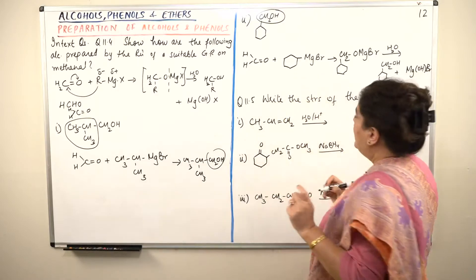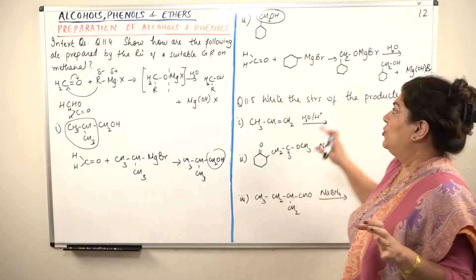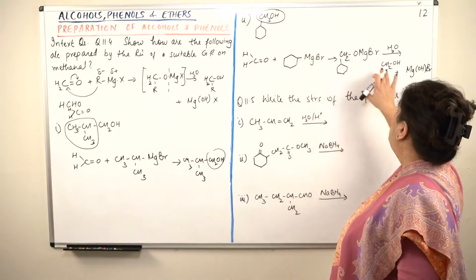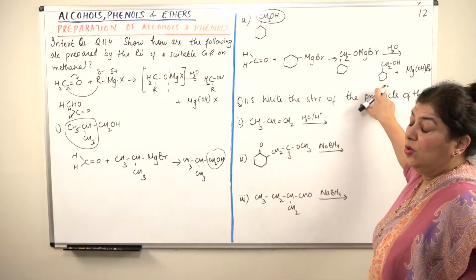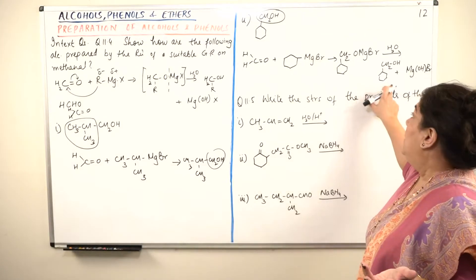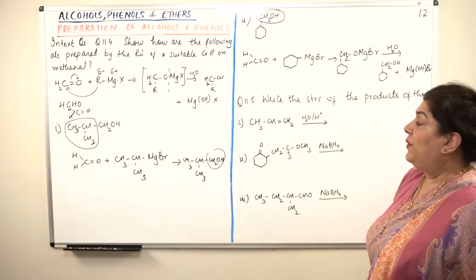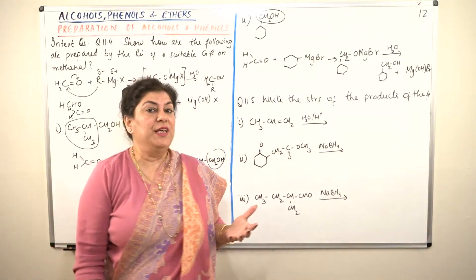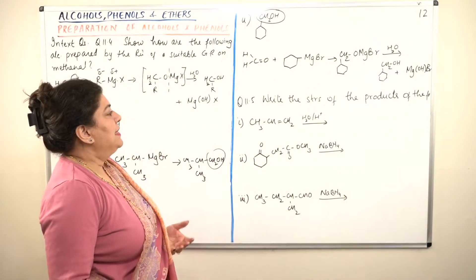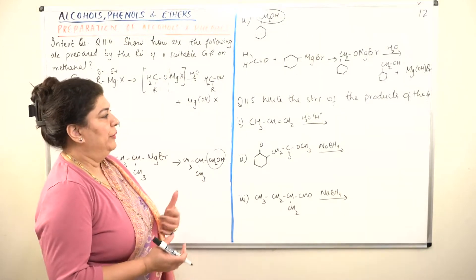That is the final product that you got. And that is what was wanted. CH2OH with the cyclohexane attached to it. So now this is, let us move to the next question. That is question 11.5. It says write the structures of the products of the following.